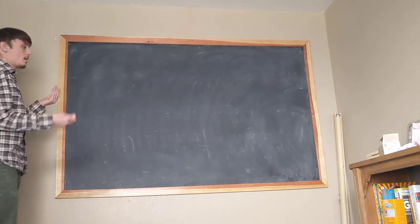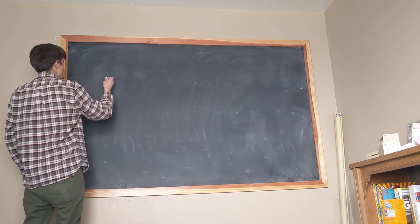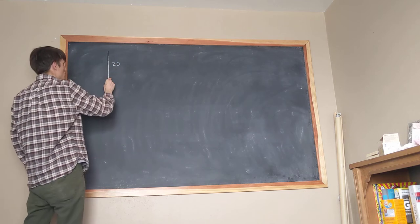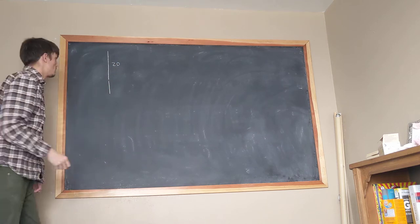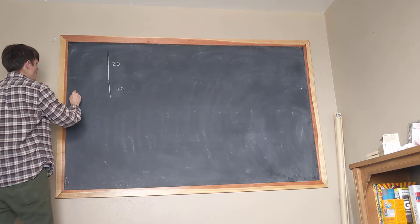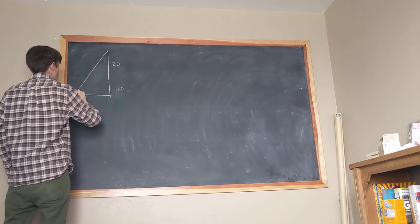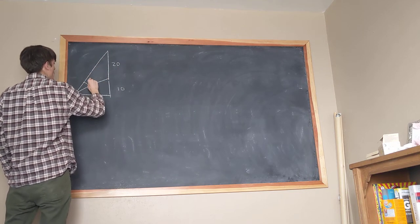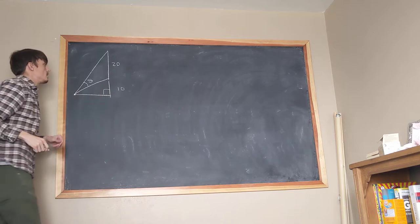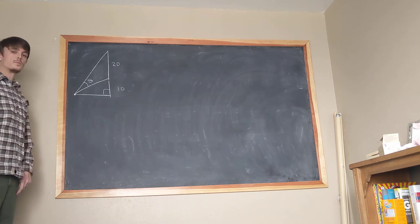Today we're going to do one of my favorite optimization problems — the movie theater problem. You're in a movie theater with a 20-foot screen standing 10 feet above the ground. The question is: how far back should you sit so that your viewing angle, which I'm going to call beta, is maximized? We want the best viewing angle possible.